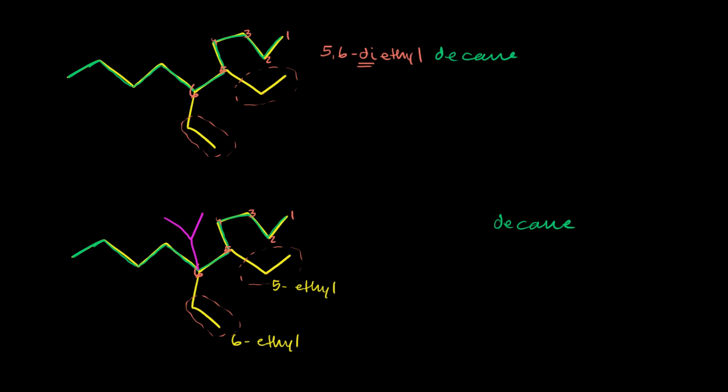Now we have this group over here. So how many carbons are on this group? Well, we have one, two, three carbons on it. We have three carbons on it. So we might want to just call it a propyl group. But notice something. We are attached to the carbon and then it later branches off into two. It actually immediately branches off into two.